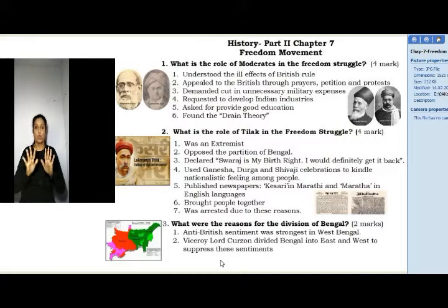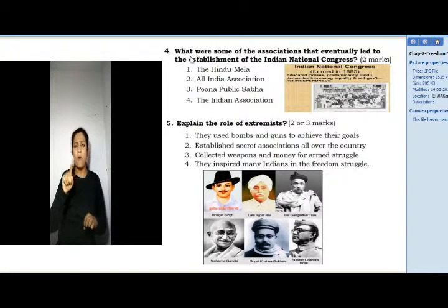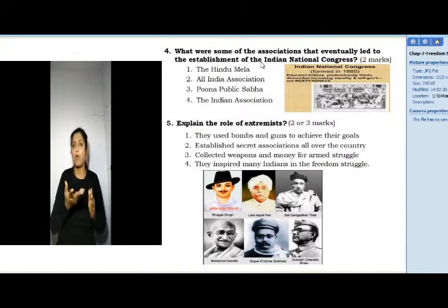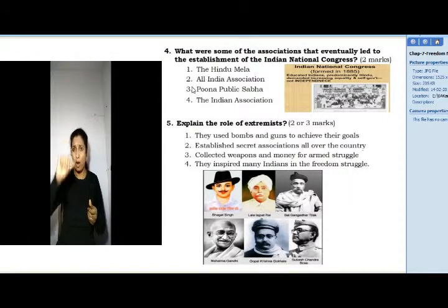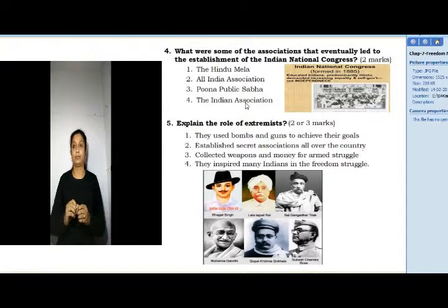Question 4: What were some of the associations that eventually led to the establishment of the Indian National Congress? (2 Marks) The Hindu Mela, All India Association, Poona Public Sabha, and the Indian Association.